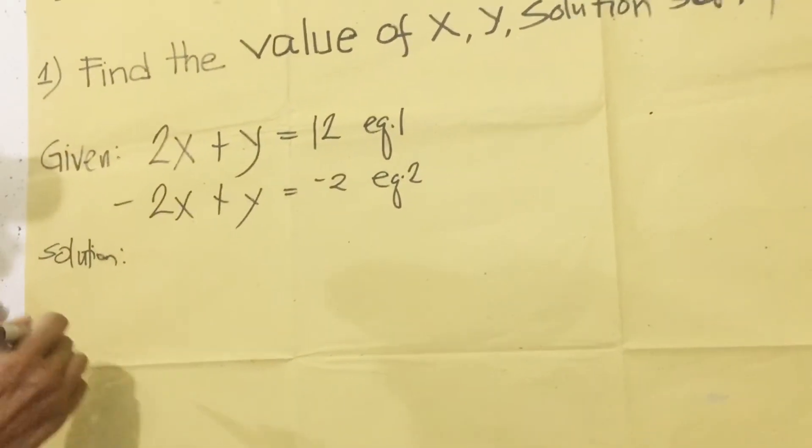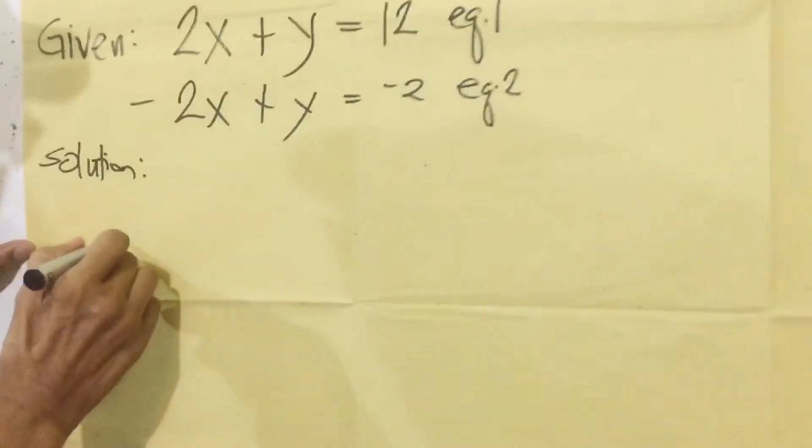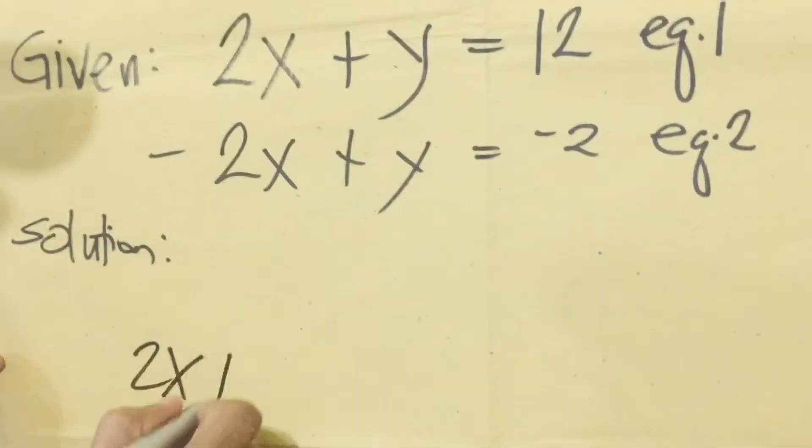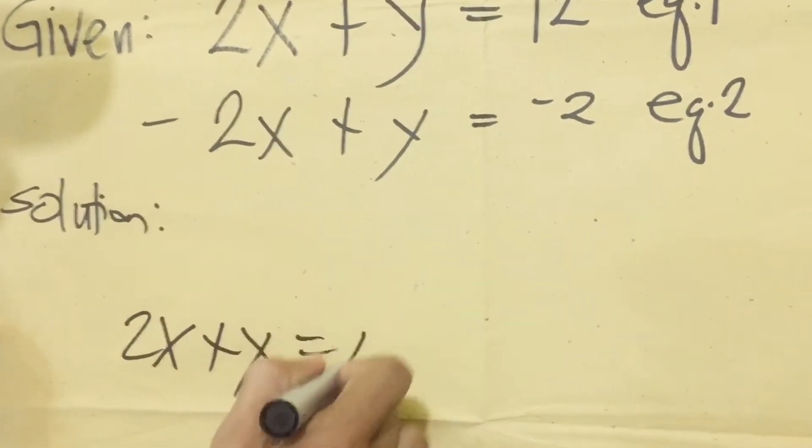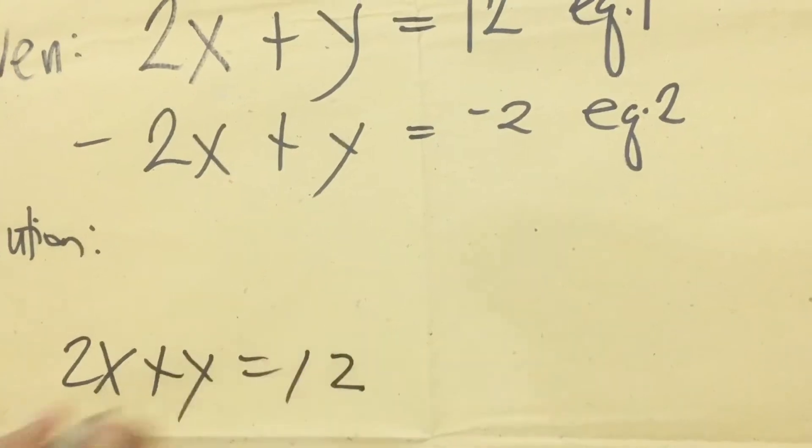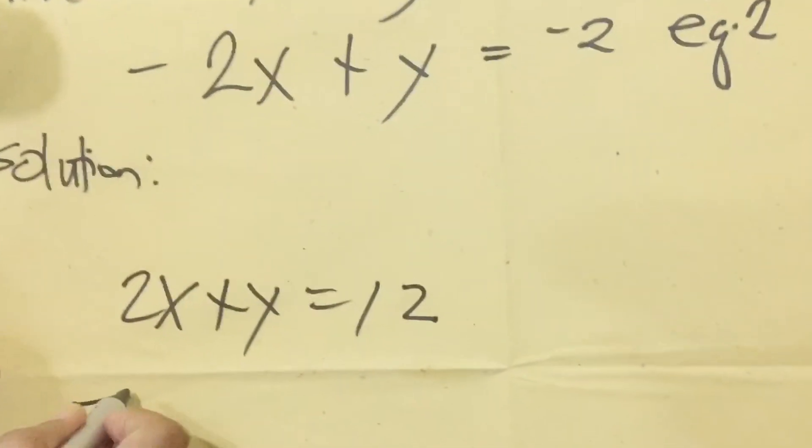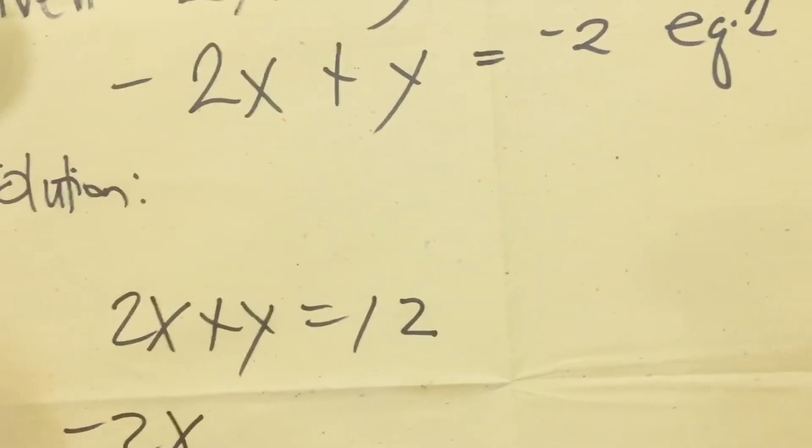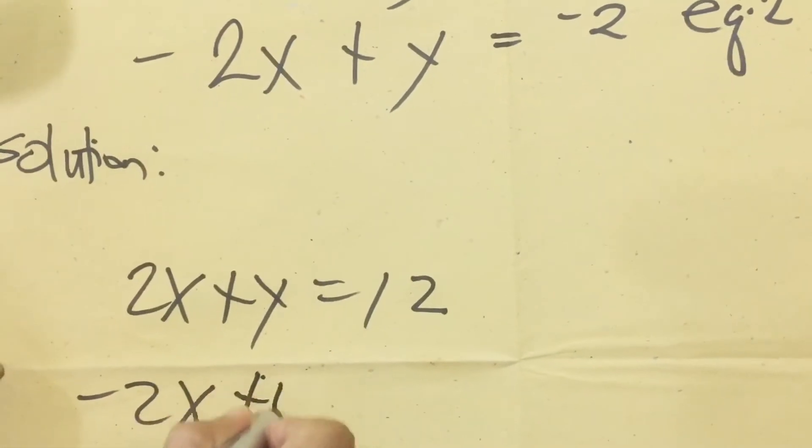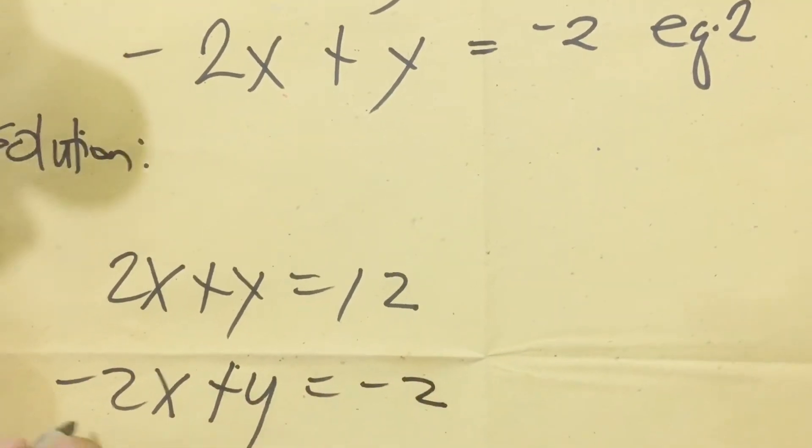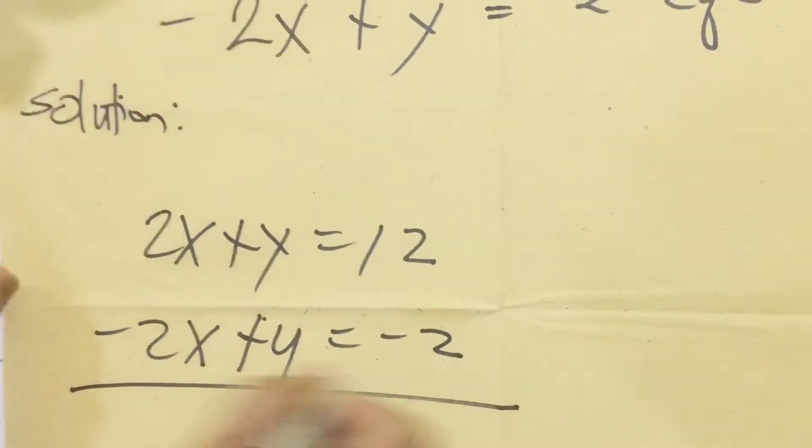First we're going to write the equations. We have 2x plus y equals 12, first equation, and the second equation we have negative 2x plus y equals negative 2. And we are going to put a line.